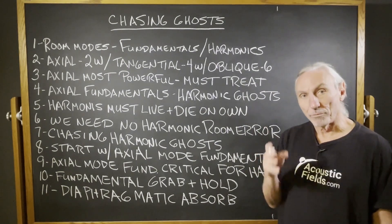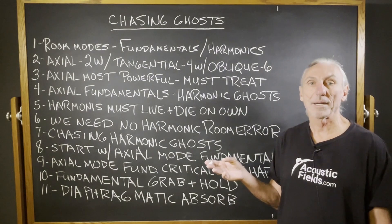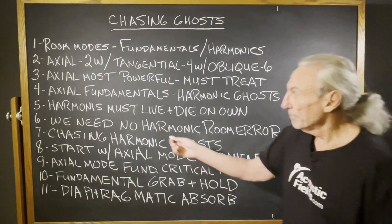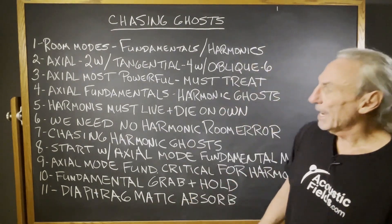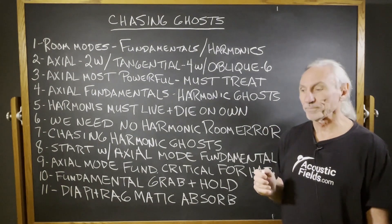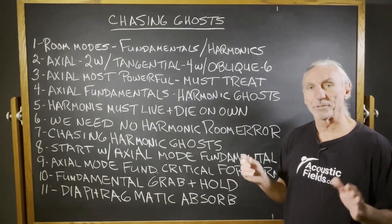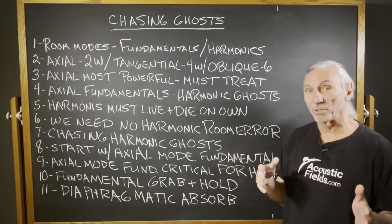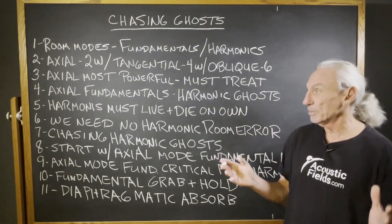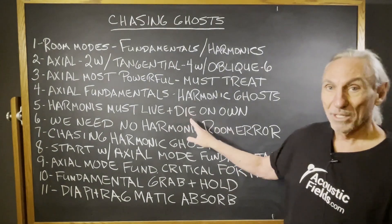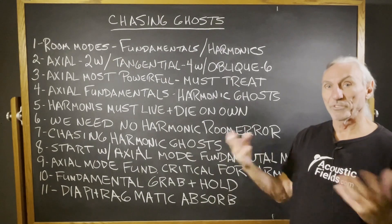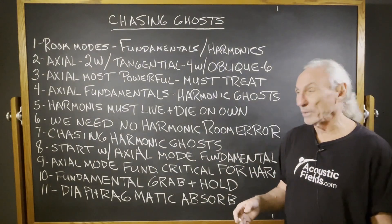If you have a 40-cycle fundamental, you have an 80-cycle first order harmonic. The harmonics are what we really want to get — they have to live and die on their own volition. This is really important. Sometimes the fundamental, especially in the low frequencies at 30, 40, or 50 cycles, is so big and pressurizes the room so much that you can't really hear the harmonic tail. It's lost in all the pressure — mud and soup, we call it.